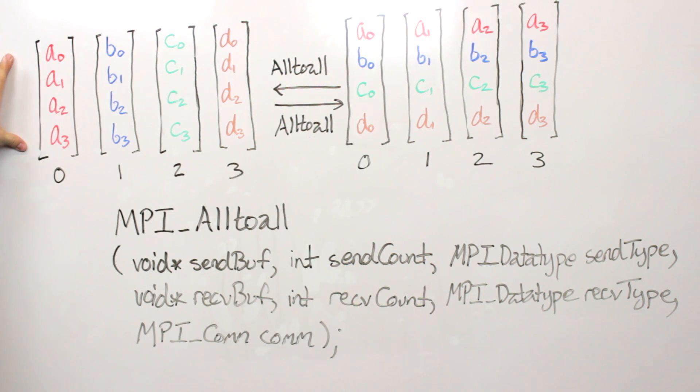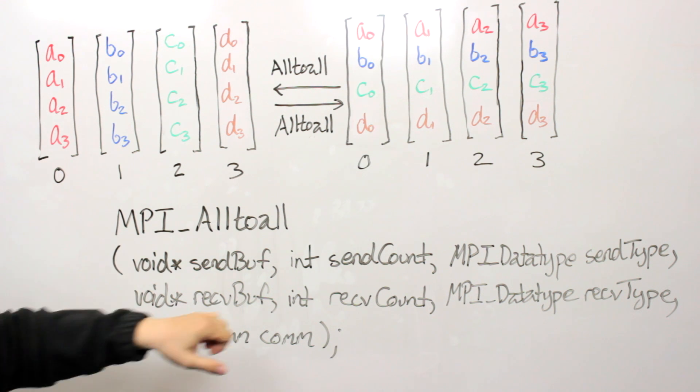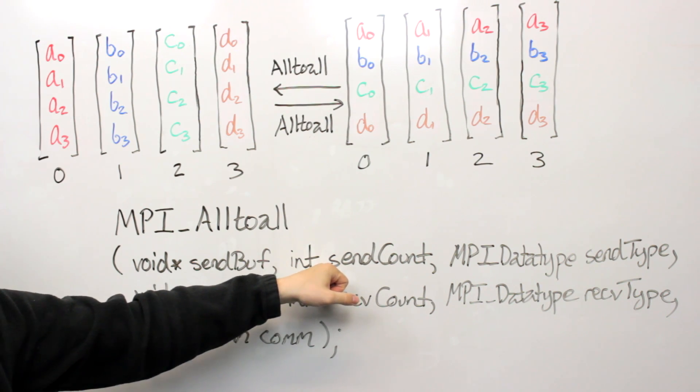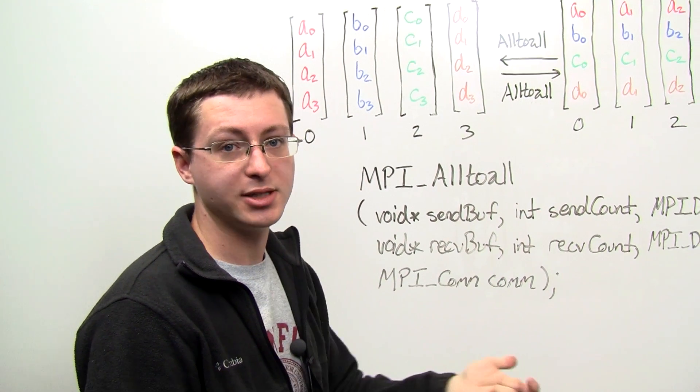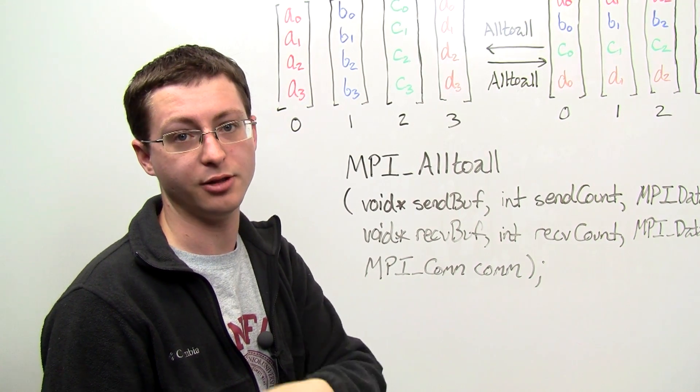this buffer was of length 64, so A0, A1, A2, and A3 were each of length 16, then the send count is 16, not 64. So the send count is the size of the message that you send to each other process.